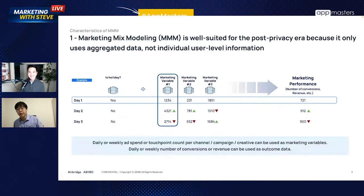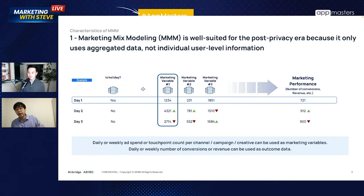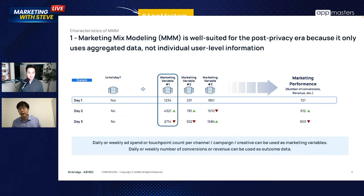Each one of these slides highlights this: MMM is well-suited for the post-privacy era because it only uses aggregated data, not individual user-level info. This is especially good news for iOS marketers. We know that the opt-in rate for advertising ID has dropped to around 20%, and because of that, the matching rate between conversions and touchpoints has dropped dramatically, causing visibility issues. Because MMM only uses aggregated data, it's a very ATT-friendly solution — even without collecting advertising IDs or user-level raw data, you can run the analysis.